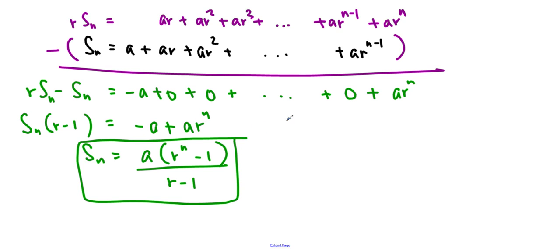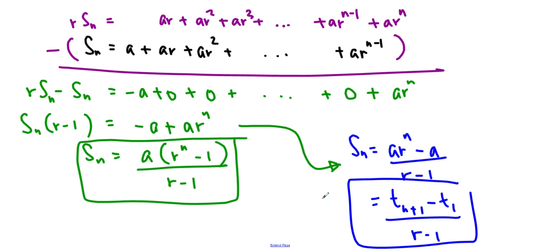If you look at this version also, you can see that it's actually going to be s sub n is equal to ar to the n minus a over r minus 1. And this is actually term n plus 1 minus the first term, a, over r minus 1. So that's another formula that we could use for that.